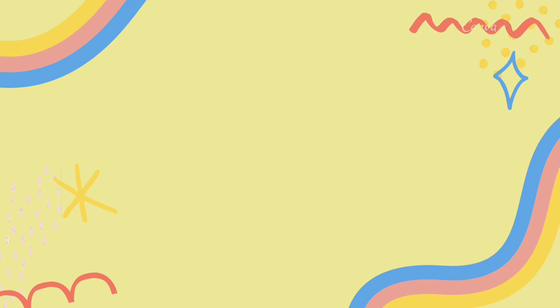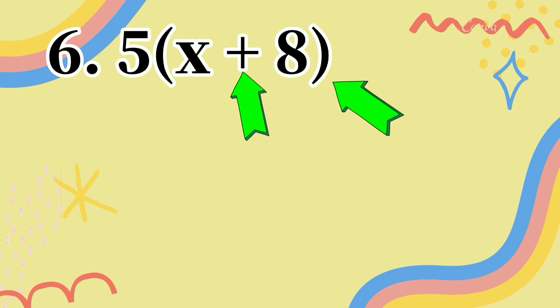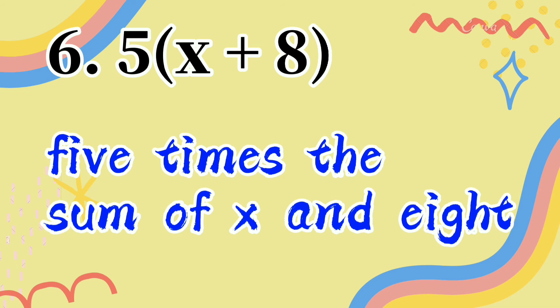The expressions from 1 to 5 were simple. Now, let's combine multiple operations in one expression. Let's have number 6. In number 6, we see parentheses and a plus sign, which indicates addition and multiplication. We can translate it as: 5 times the sum of x and 8.